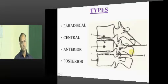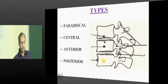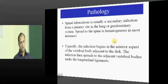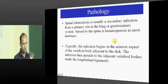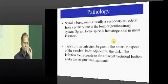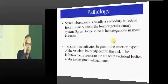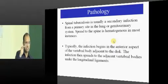Posterior involvement can be in the pedicle, transverse process, or spinous process. The pathology is the same everywhere — tubercular osteomyelitis, granulation tissue, pus formation — and if you have only a bony lesion, the bone is destroyed and there is a collapse. When the vertebra collapses it bends forward, and forward bending is called kyphosis. If one or two vertebrae have collapsed and bent forward, you call it knuckle kyphos.